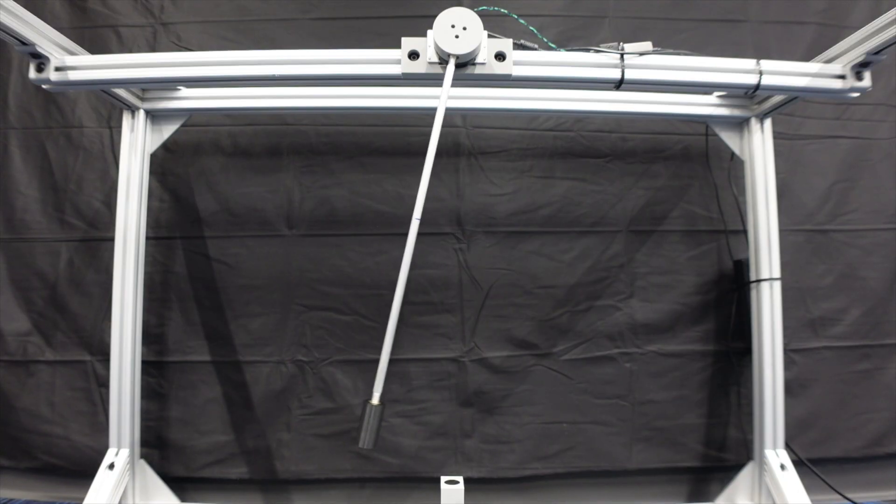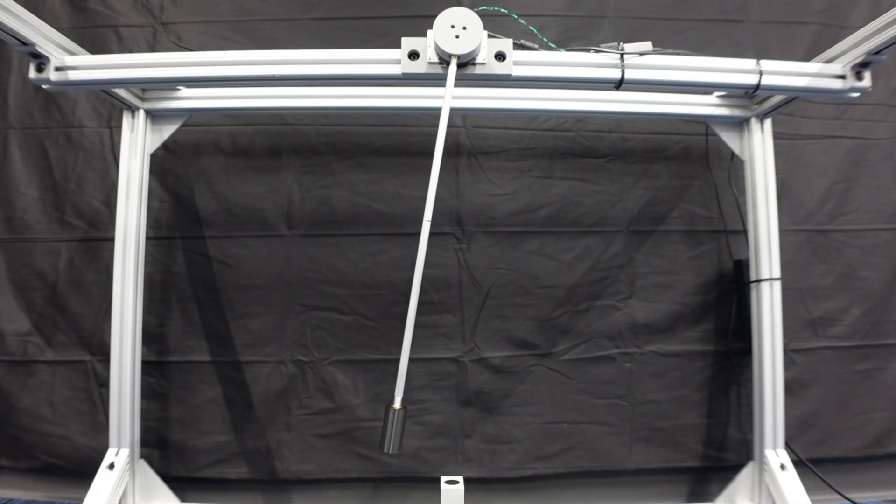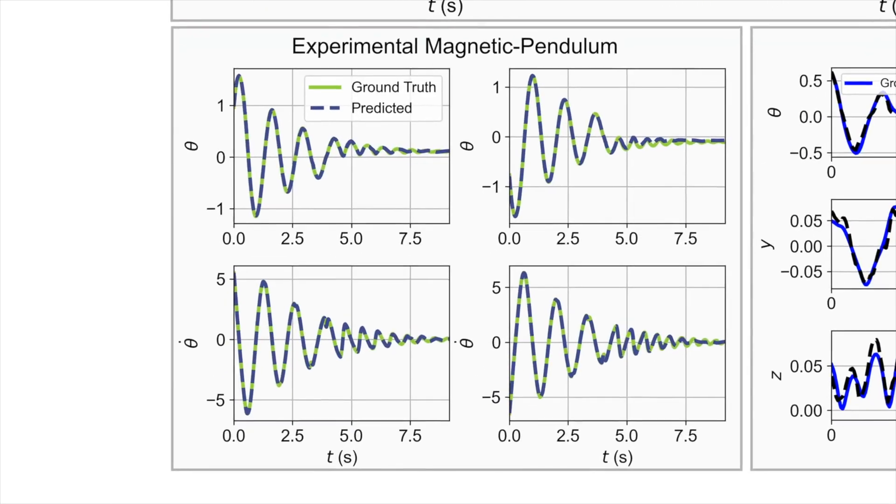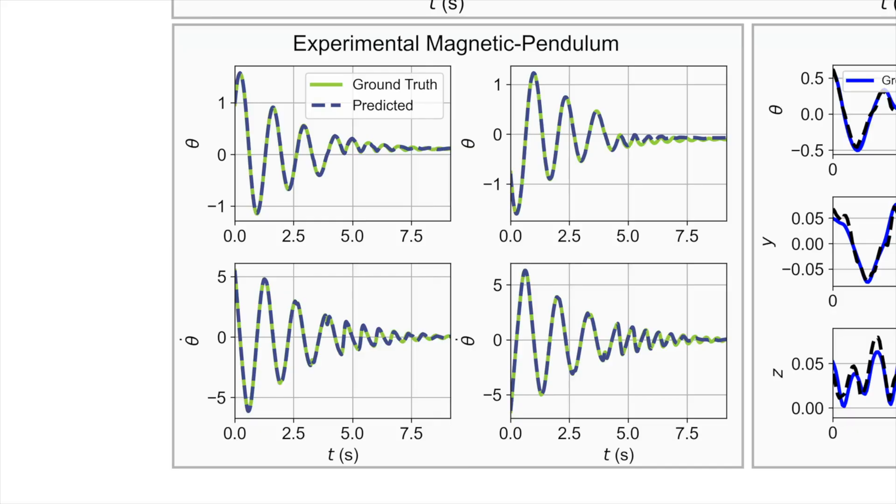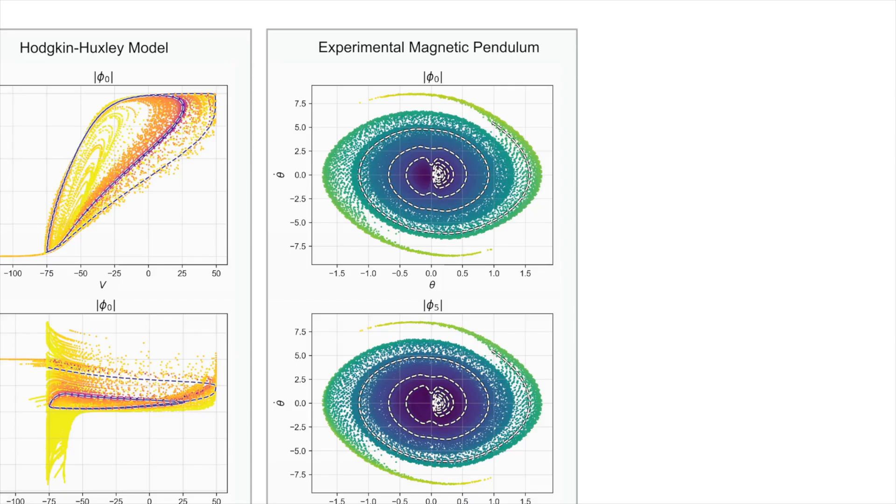Notably, our method also works well when applied to noisy experimental data. The real magnetic pendulum system has more than one attractor and is strongly nonlinear due to the magnetic repulsion. We were able to make accurate long horizon predictions, extract Lyapunov functions, and discover the basins of attraction directly from experimental data.